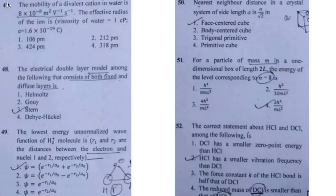The first question says the mobility of a divalent cation in water is given as 8 × 10⁻⁸ m² per volt per second. The effective radius of the ion is to be found, and the viscosity was given in poise. Poise is a unit of viscosity — you have to convert it into pascal-second. One centipoise equals 10⁻³ pascal-second. Then e is given to you, and you use the particular equation.